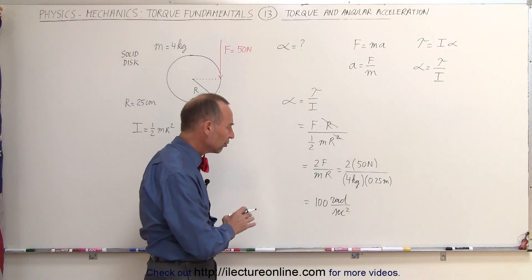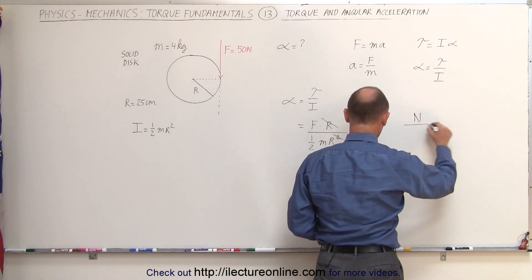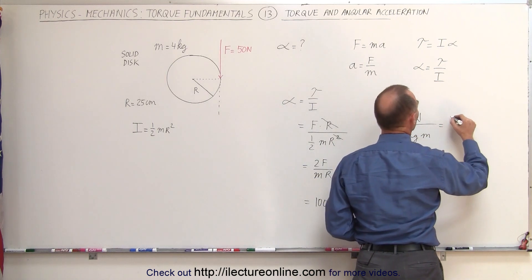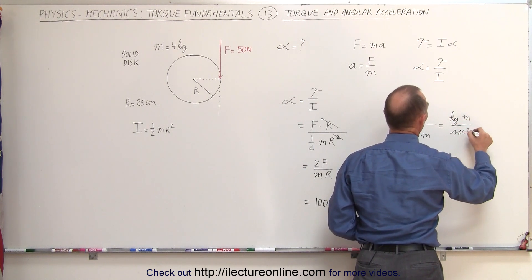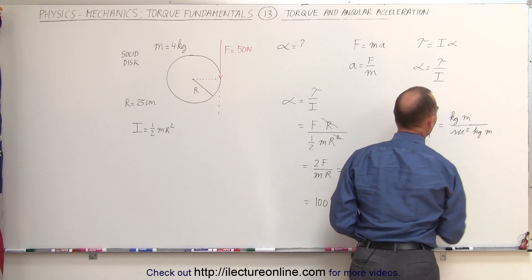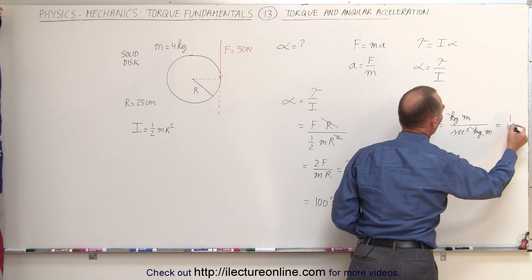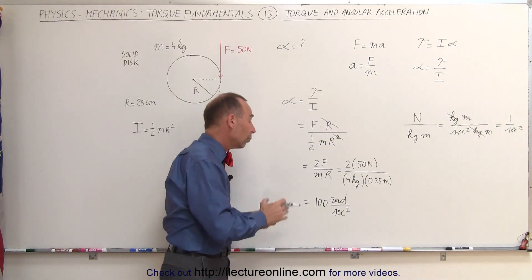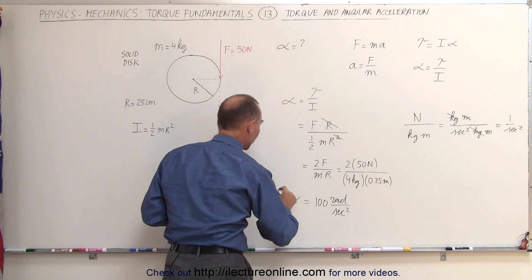Now you may wonder how we get radians per second squared out of that. We have Newtons divided by kilograms times meters. Notice that Newtons is the force that gives one kilogram the acceleration of one meter per second squared. We have the kilograms in the denominator and the meters in the denominator. The kilograms cancel, the meters cancel, and we're left with one over seconds squared. The radian is a non-unit, but we put it in anyway to give clarity that we're dealing with angular acceleration.